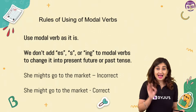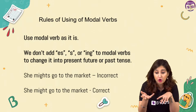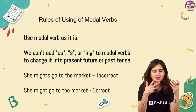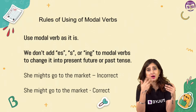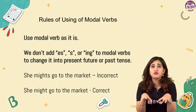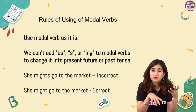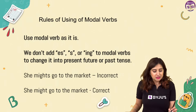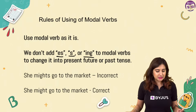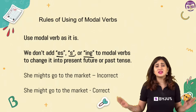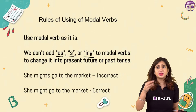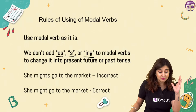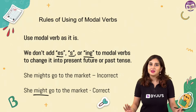Use modal verbs as they are. Unlike the main verb which changes form, and unlike other helping verbs like am, are, is, has, had which change according to the subject, modal verbs do not change form - they remain as they are regardless of the verb, pronoun, or noun. We don't make them plural, don't add -ing, don't change them with tense. 'She might go to the market' - might stays as might, always.